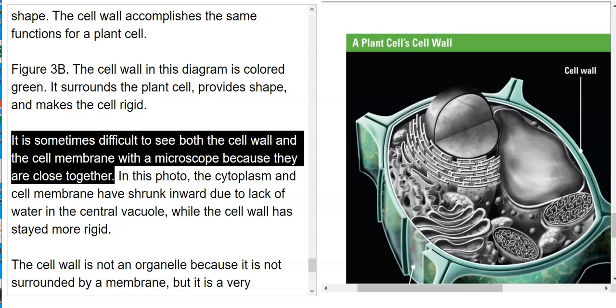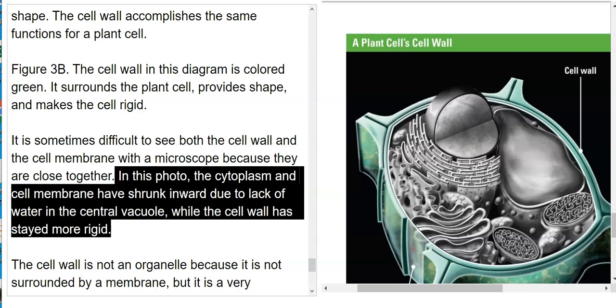It is sometimes difficult to see both the cell wall and the cell membrane with a microscope because they are so close together. In this photo, the cytoplasm and cell membrane have shrunk inward due to lack of water in the central vacuole, while the cell wall has stayed more rigid.